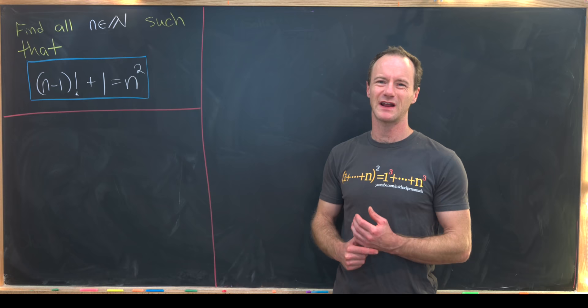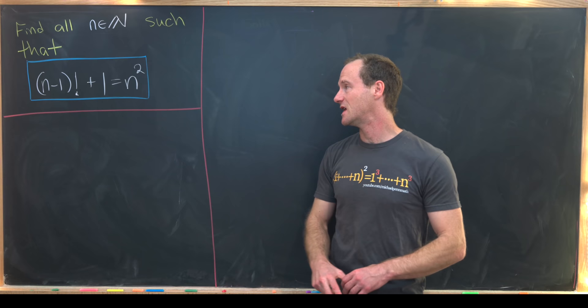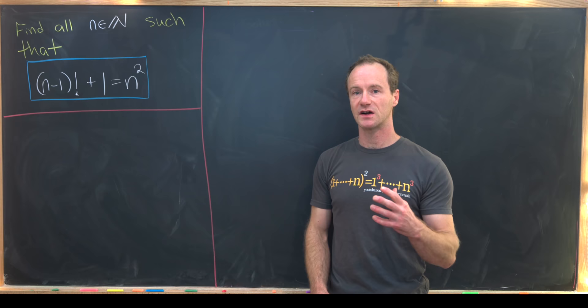Here we've got a pretty classic number theory problem and I'm not quite sure the origin of this problem but I've seen it in a couple of different places. So our goal is to find all natural numbers n such that n minus 1 factorial plus 1 is equal to n squared.